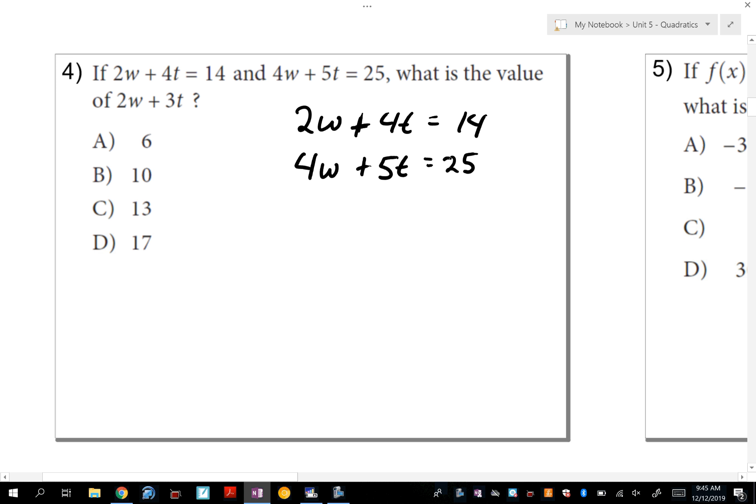Personally, I think the easiest way for me to do this is to do elimination. And I'm going to multiply the first equation by negative 2. By doing that, I'm going to have -4w - 8t = -28. And if I rewrite the second equation and use addition, I will eliminate the variable w. That's the whole goal here is to eliminate one of these variables to solve for the other. So if I add, I get -3t = -3. So t is equal to 1.